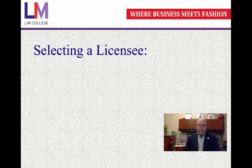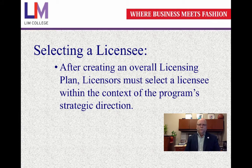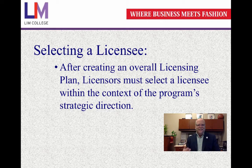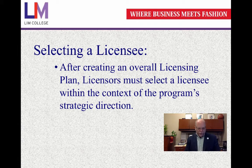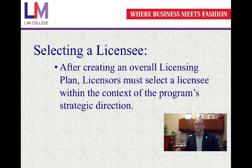Criteria as part of your strategy you need to put in place in selecting a proper licensee. So after creating your overall licensing plan, licensors must select the licensee within the context of the business's strategic direction. You got your distribution, your products, everything in place — the timing when you're going to launch. The next thing is selecting the proper licensee within the context of your overall plan.